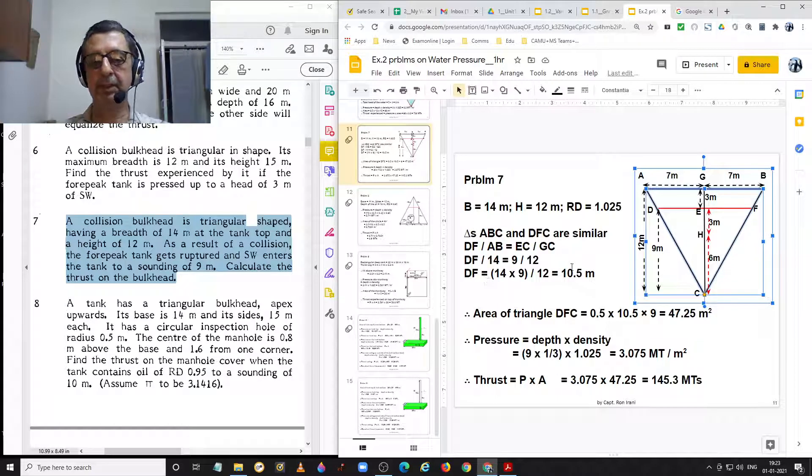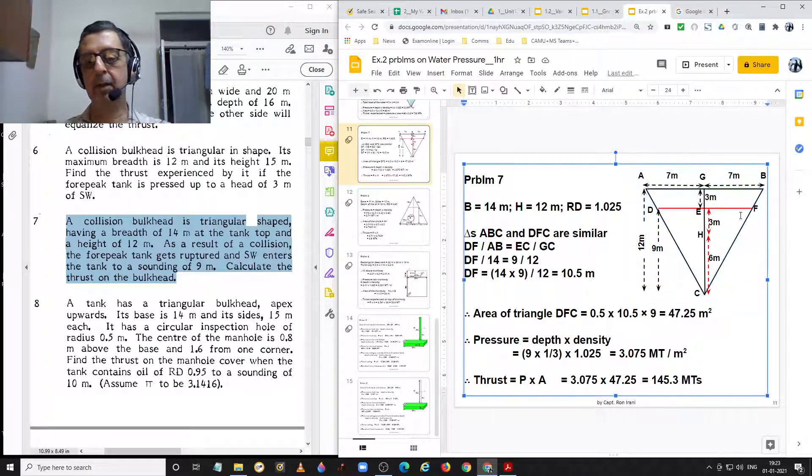Now there are two similar triangles that we have to consider. The first is triangle ABC and the other one is triangle DFC. In these two similar triangles, we know the heights that is EC and GC. Height EC is equal to 9 meters and height GC is equal to 12 meters. We know the base AB is equal to 14 meters, but we do not know the base, the length of the base DF, which we have to find out. Thus, when we take a simple ratio and proportion, DF upon AB is equal to EC upon GC.